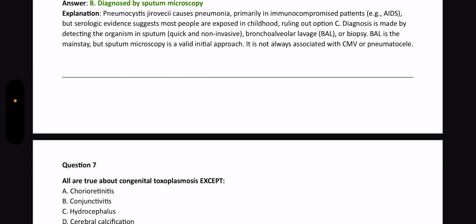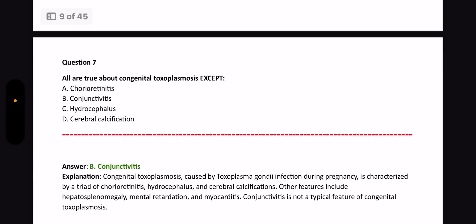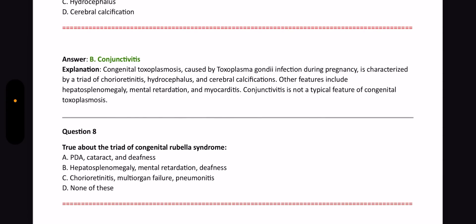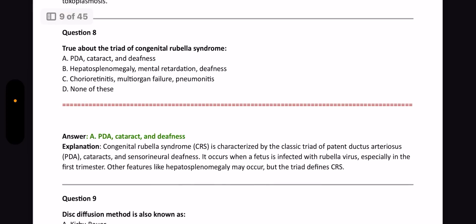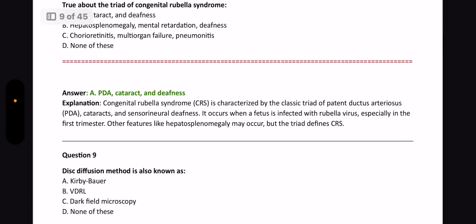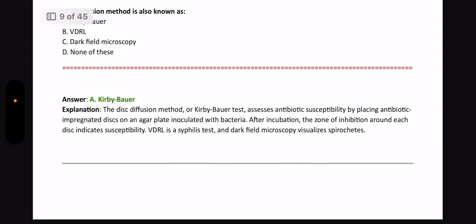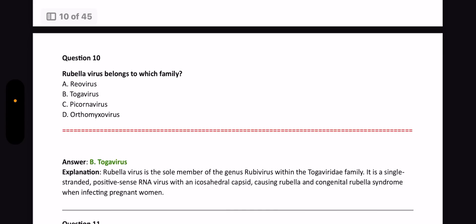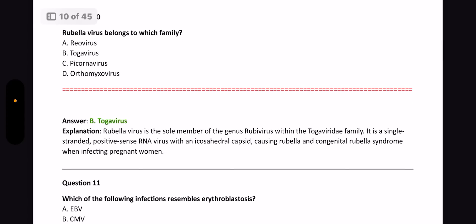Next question: All are true about congenital toxoplasmosis except? The answer is conjunctivitis. Next question: Classic triad of congenital rubella syndrome? The answer is PDA, cataract, and deafness. Next question: Disc diffusion method is also known as? The answer is Kirby-Bauer. Moving to question 10: Rubella virus belongs to which family? The answer is Togavirus — it belongs to the Togaviridae family and the genus is Rubivirus.